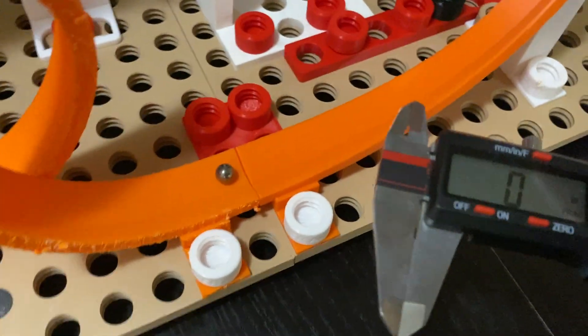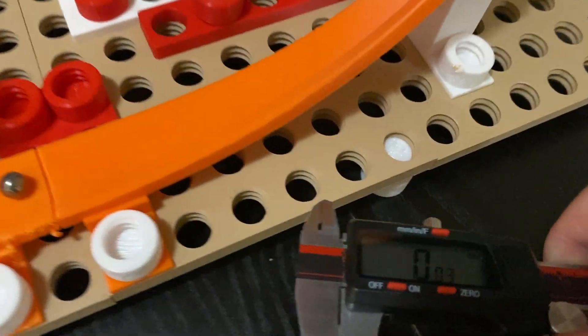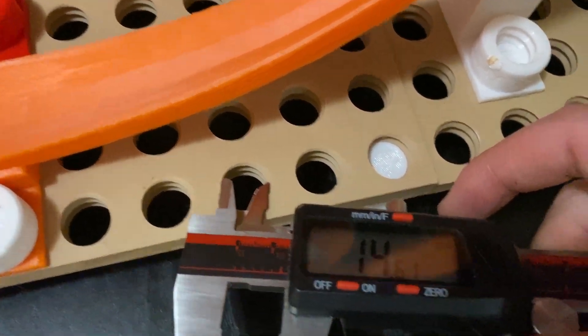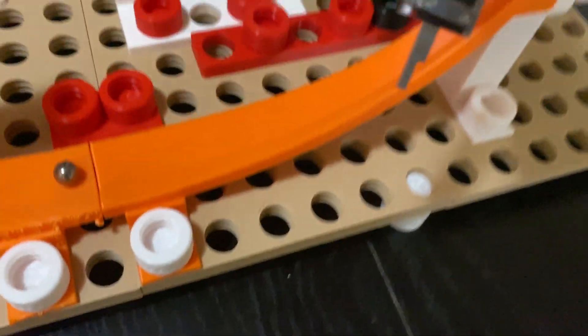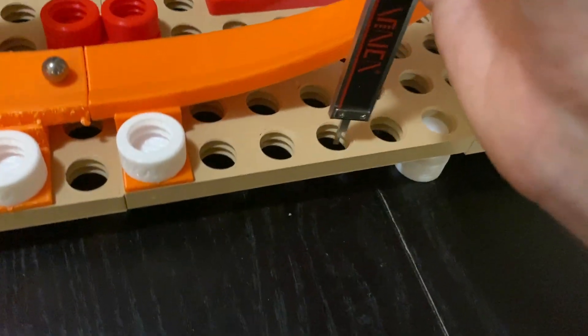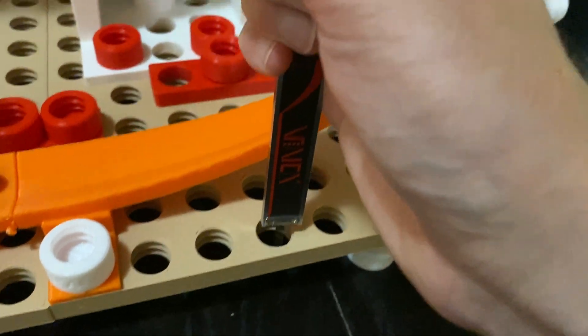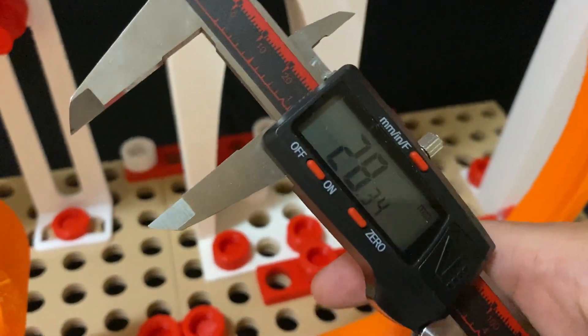You can also measure the diameter of circles like this, as well as use the depth gauge to measure the depth of holes just like that. And you can see the number right there.